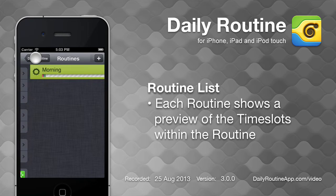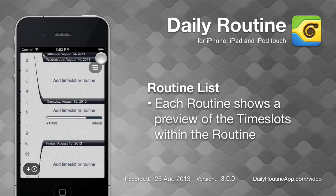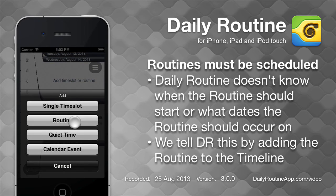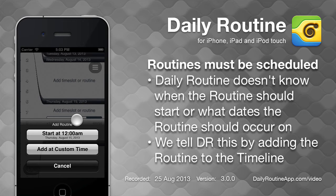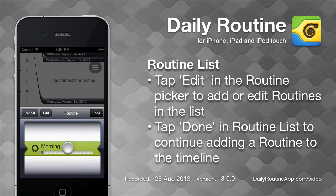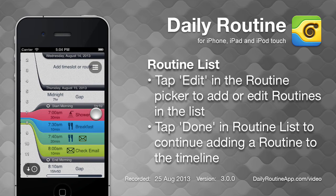When we return to the timeline, our morning routine is not there yet. We first need to assign the routine a start time and some dates. Tap a date we wish to add the routine to, then tap Add, then Routine. Tap Add at Custom Time, then pick a start time. If we hadn't created our routine yet, we could tap the Edit button to bring up the routine list and add or edit routines there. But the routine we want is there, so we select it and our routine appears in the timeline.